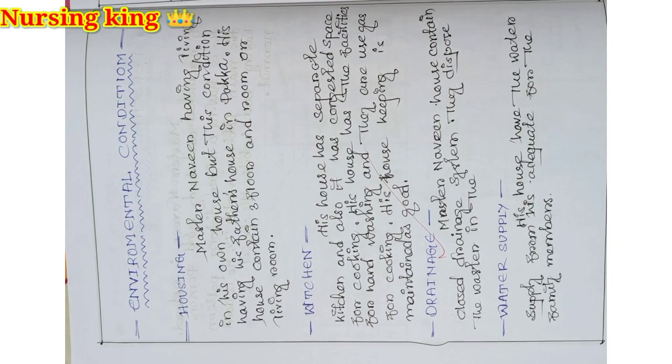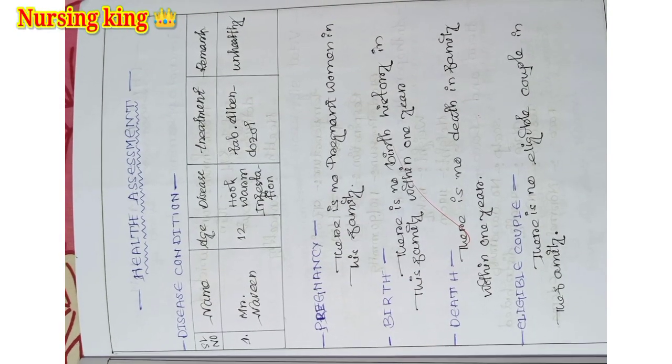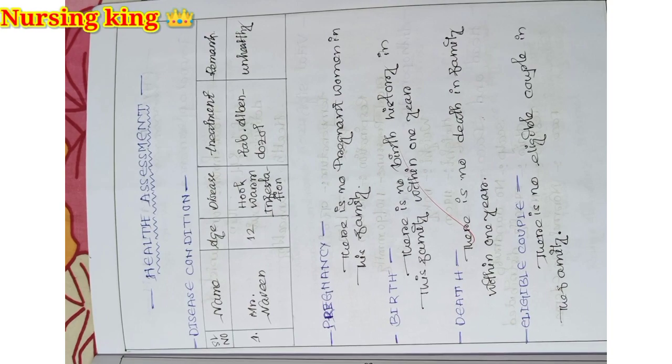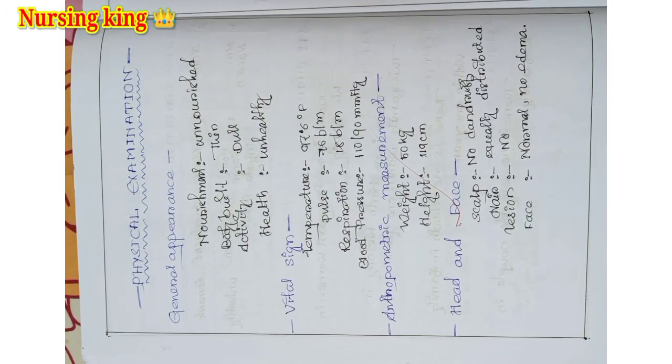After that, you have to come into the community care plan. You have to write the environmental condition and health assessment. In that health assessment, you have to write the birth date and immunization history if the history is there or not.